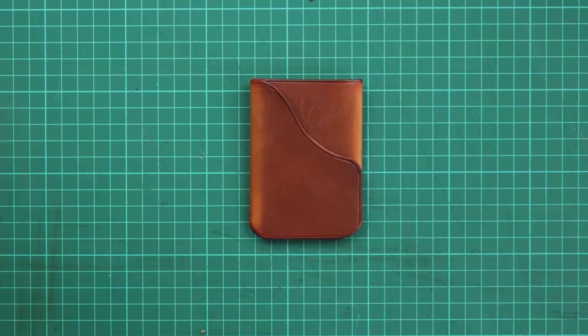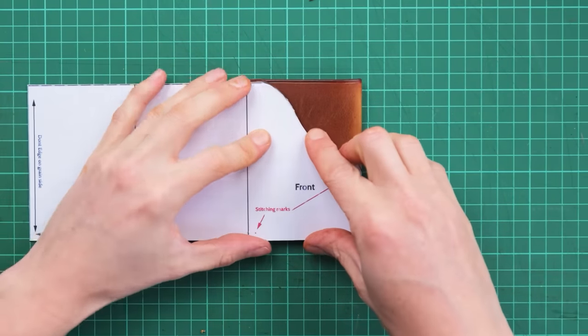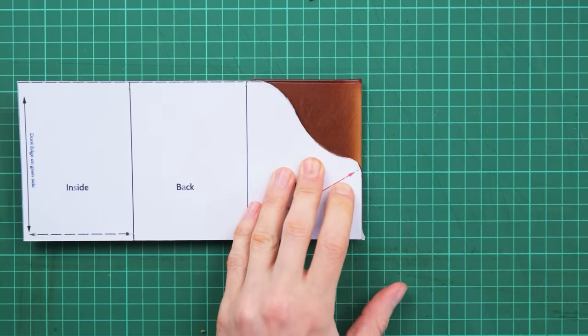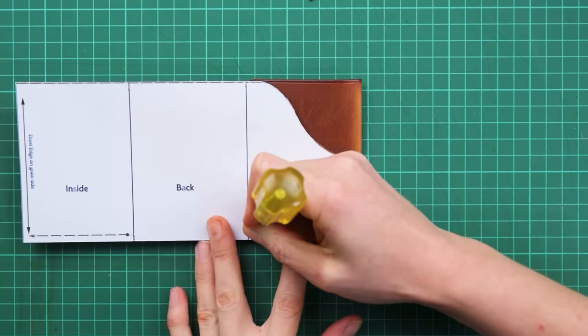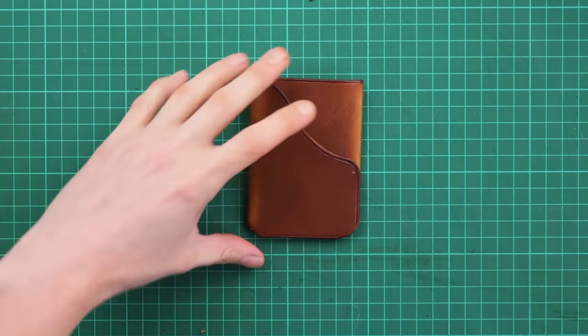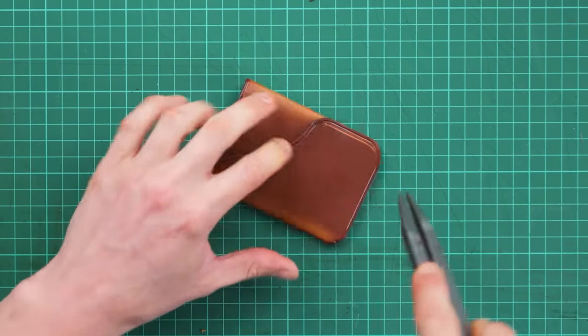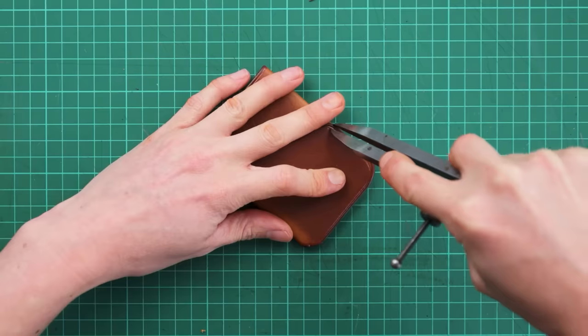And now once you've done that we can then get our pattern back and we're going to mark on where our stitching needs to be via the two red dots that are on the front section of our pattern. And then using our dividers set to about one eighth of an inch or four to five millimeters wide we can then draw a line between those two dots.